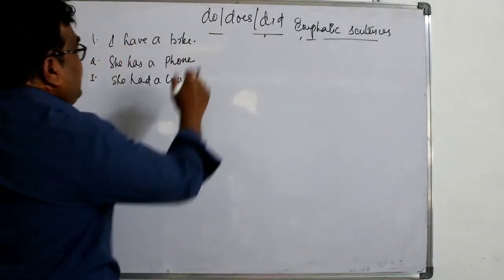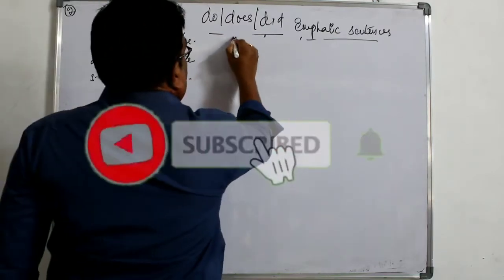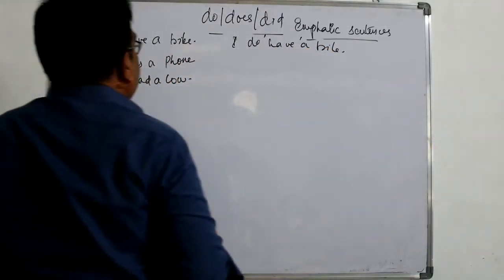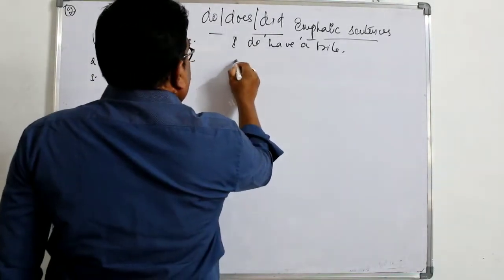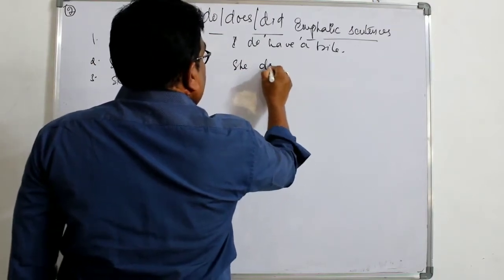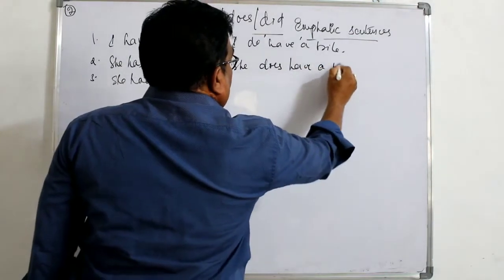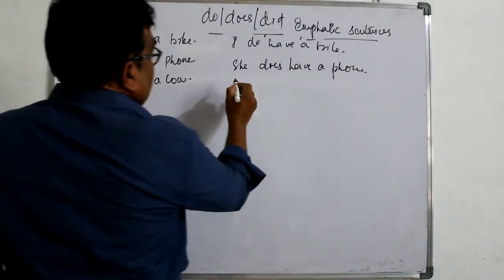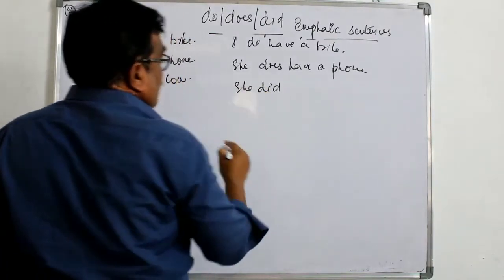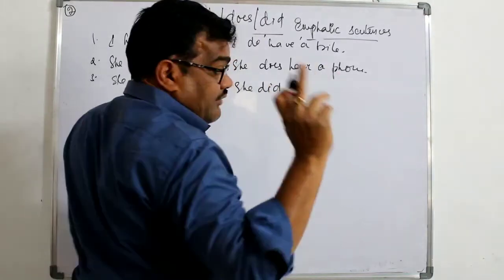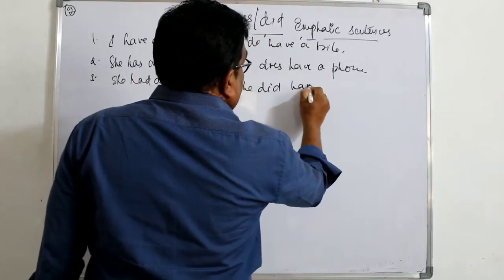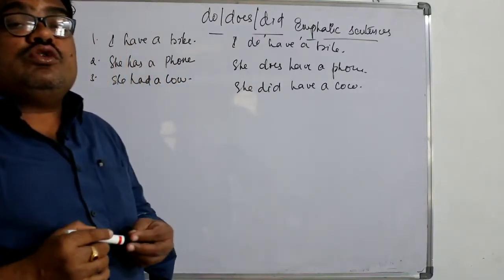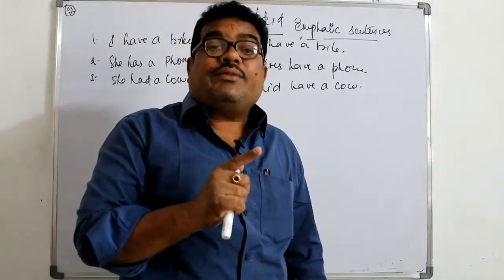You must use only 'have' after do, does, or did. For example: 'I have a bike' becomes 'I do have a bike.' Second example: 'She has a phone' — because 'she' is third person singular, it becomes 'She does have a phone.' Third example: 'She had a car' becomes 'She did have a car.'